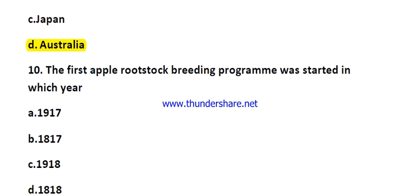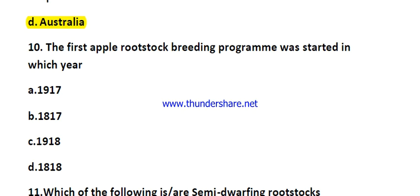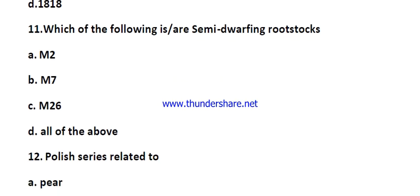Question number ten: the first apple breeding program was started in which year? The options are 1917, 1817, 1918, and 1818. The right answer is 1917. The research station was East Malling Research Station, present in the UK.